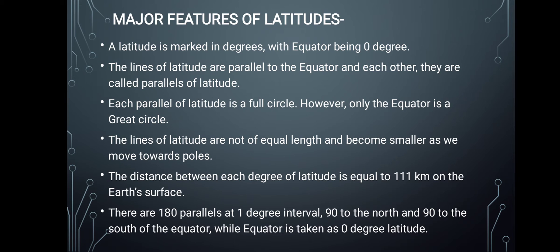The lines of latitude are not of equal length — they become smaller as they move towards the poles. The next characteristic is that the distance between each degree of latitude is equal to 111 kilometers on the earth's surface. The difference between one degree and the next, if measured on the actual earth, is found to be approximately 111 kilometers.